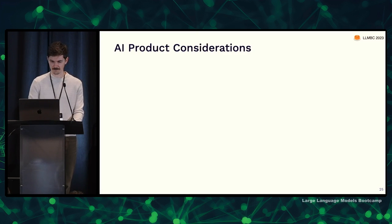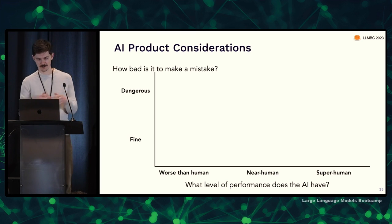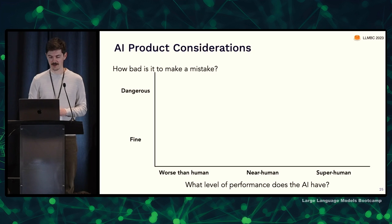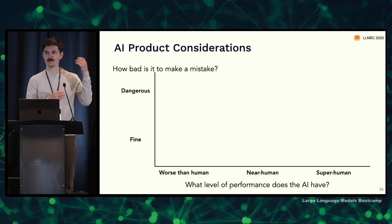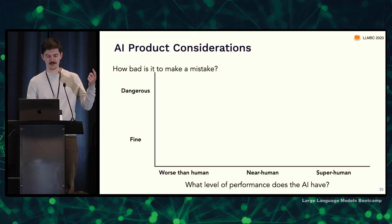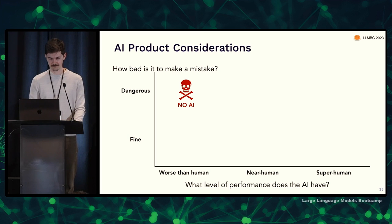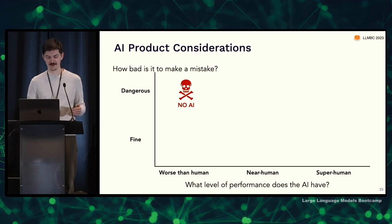So what about AI specifically? There are different levels of applying AI, and a helpful matrix considers: is the AI worse than, as good as, or better than humans at this task? And if the AI makes a mistake, how bad is that — is it really dangerous or mostly fine? If performance is worse than human level and it's dangerous to make a mistake, then no AI. That's where self-driving is right now — still slightly worse than human and really dangerous if it makes a mistake.